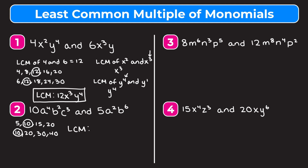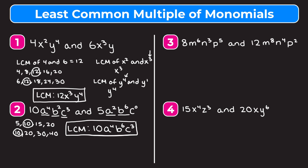For our overall LCM we start with 10. For the a terms we have a to the fourth and a squared — we take the higher exponent, a to the fourth. For b squared and b to the sixth, we take b to the sixth. For c, our first monomial has c to the third but the second has no c — we can think of that as c to the zero. We still take the higher exponent, so we include c to the third. The least common multiple is 10a to the fourth b to the sixth c to the third.